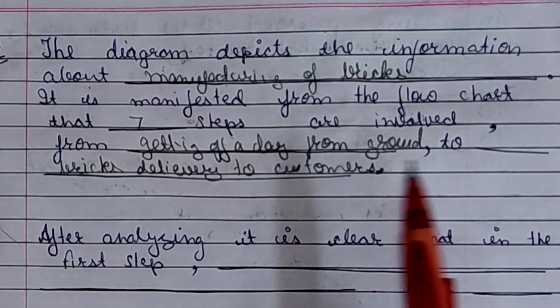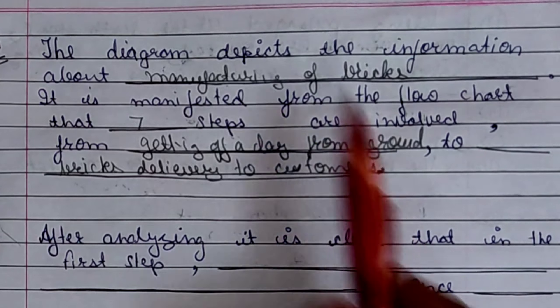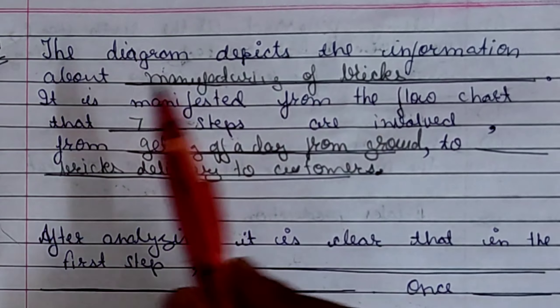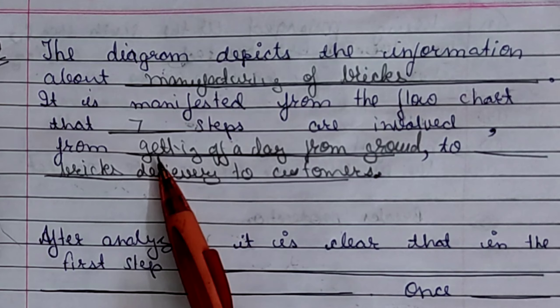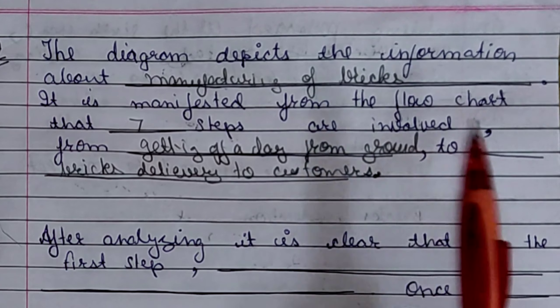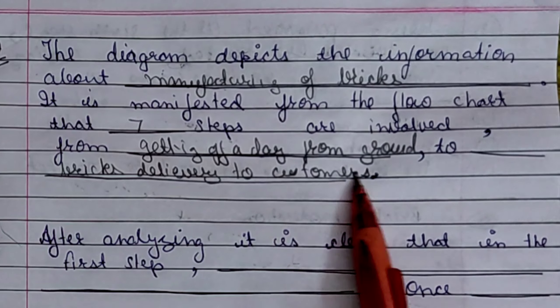So you will write introduction for report like this. The diagram depicts the information about manufacturing of bricks. It is manifested from the flowchart that 7 steps are involved from getting off a clay from ground to bricks delivering to customers.